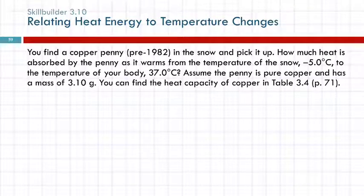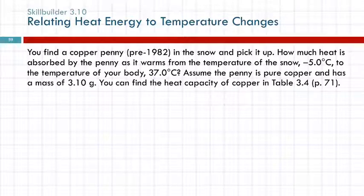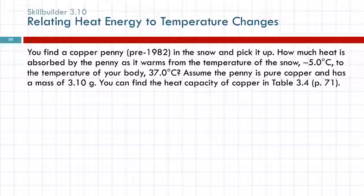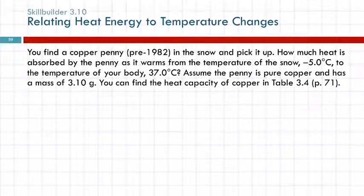We can do problems like this. Here we're getting more words in our story problems. You find a copper penny in the snow and pick it up. How much heat is absorbed by the penny as it warms from the temperature of the snow, minus 5 degrees Celsius, to the temperature of your body, 37 degrees Celsius? Assume the penny is pure copper and has a mass of 3.10 grams. You can find the heat capacity of copper in table 3.4.